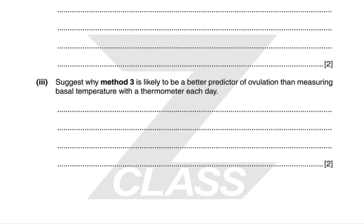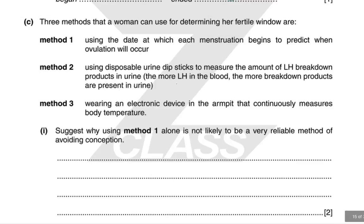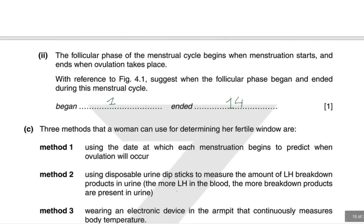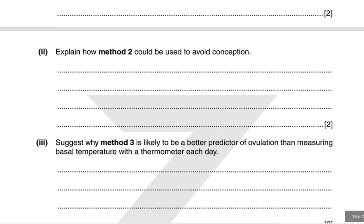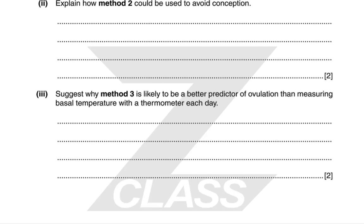Method 3 is likely to be a better predictor of ovulation than measuring basal temperature with a thermometer each day because the temperature change is quite small — from around 36.3 to 36.7 degrees — so a regular thermometer may not be accurate enough. Continuous monitoring avoids misreadings or inaccuracies.